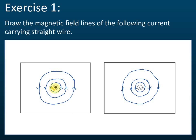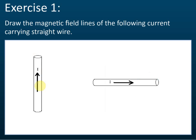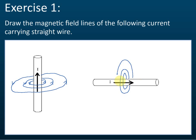The answer shows concentric circles with directions determined by the right-hand grip rule. For the 3D view cases, the circles may appear as ellipses. Use the right-hand grip rule to determine the directions for all cases.